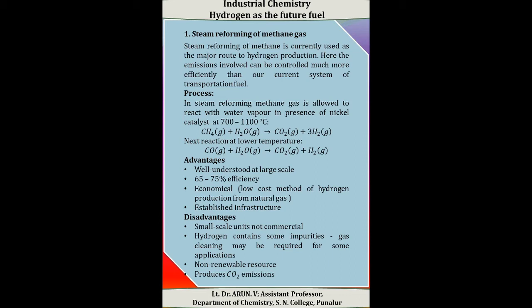The disadvantages of steam reforming include that small-scale units are not yet commercialized. The hydrogen obtained in most cases contains impurities. It uses a non-renewable resource, and this process results in the production of carbon dioxide emissions.